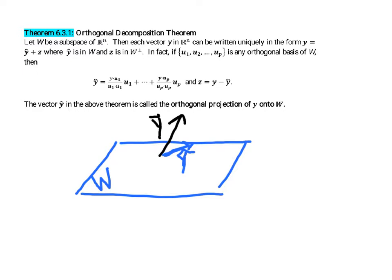And then a vector Z that is in W perp, or it's perpendicular to W. So it would look something like this. So this is the vector Z. And so this vector Y is equal to the sum of the vector Y hat that lies in W plus a vector that's orthogonal to W.